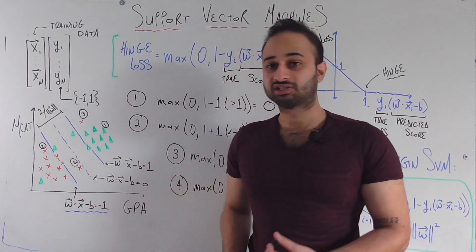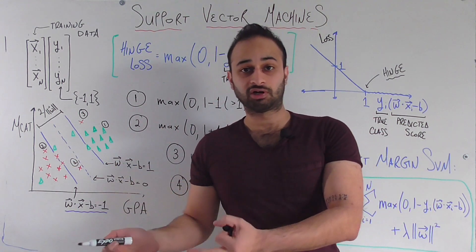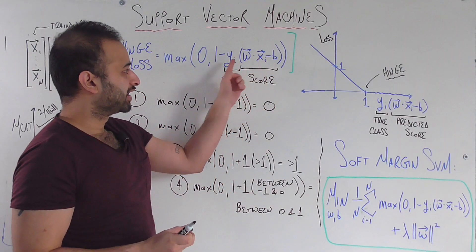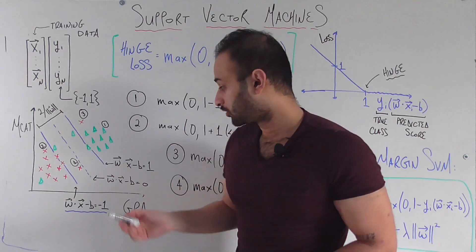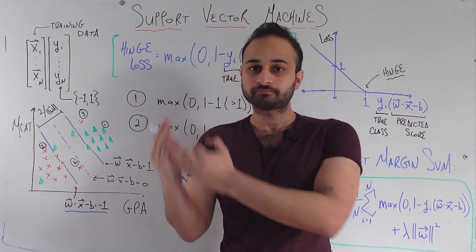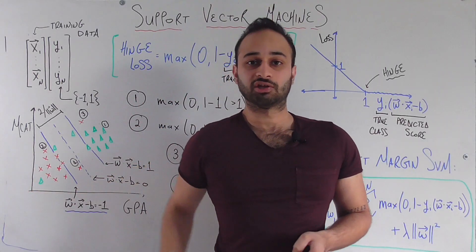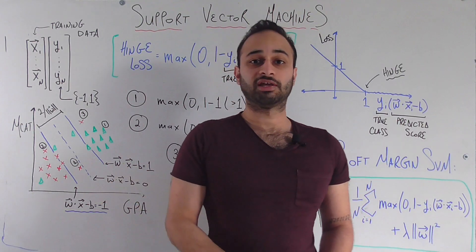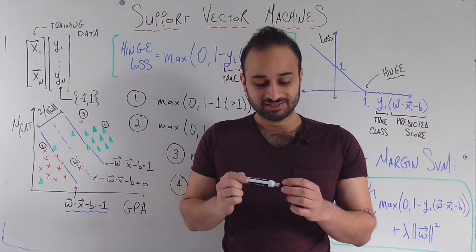As we said in the last video, the three lines each have different equations: the top line is w·x − b = 1, the decision boundary is w·x − b = 0, and the lower line is w·x − b = −1. That quantity w·x − b is exactly what I've called 'score.' Anything above the top blue line has a score greater than one; below the bottom line, a score less than negative one; and within the margin, a score between negative one and one.